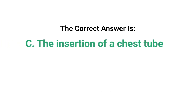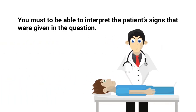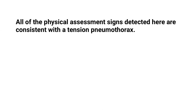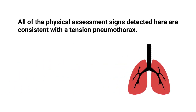The correct answer is C, the insertion of a chest tube. In order to get this one correct, you have to be able to interpret the patient signs given in the question. All of the physical assessment signs detected here are consistent with a tension pneumothorax.